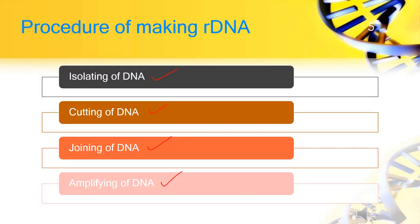These are the procedures for making recombinant DNA. The first one is isolation of DNA, followed by cutting of DNA, joining of DNA, and amplifying of DNA.